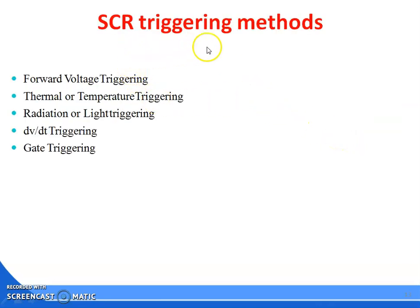Now come to the SCR triggering methods. Before studying the triggering method, you must know the actual meaning of triggering. Triggering means on state - making the device from forward blocking mode to forward conducting mode, or making the device from off state to on state. For that reason, several methods are adapted for turning on the SCR.